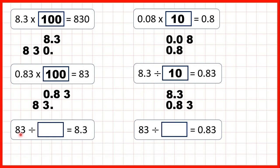Now 83 divided by what equals 8.3. We write out 83 and put our decimal point on the end because it's a whole number, then write 8.3 directly below with the decimal points lined up. We can see that the digits have moved one square to the right, so we've divided by 10.